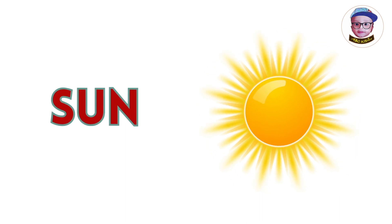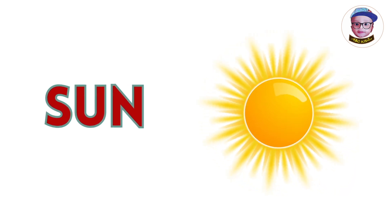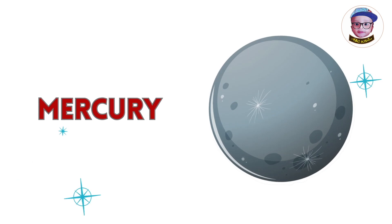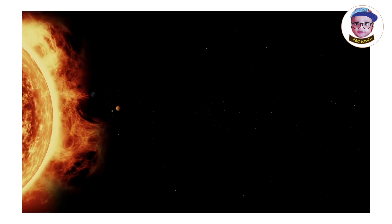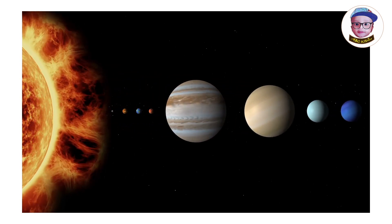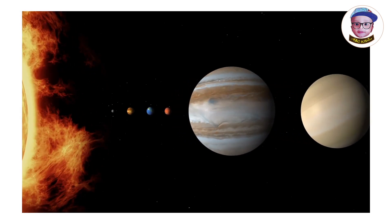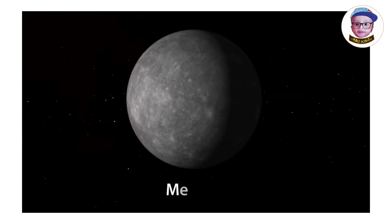Sun. Mercury. Mercury is the first and nearest planet. It is the smallest planet.